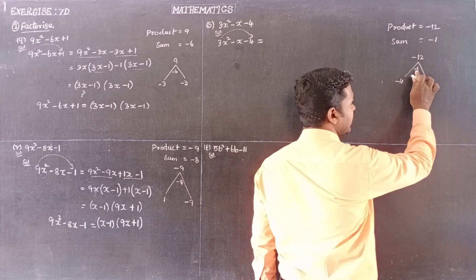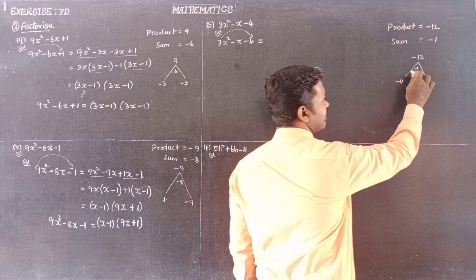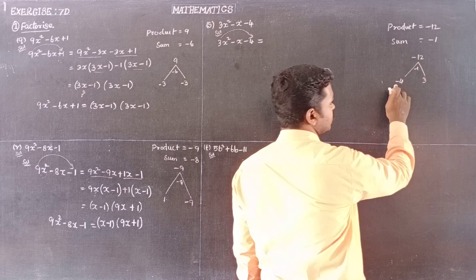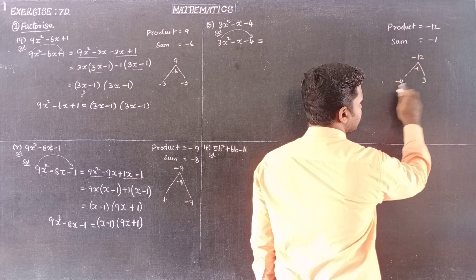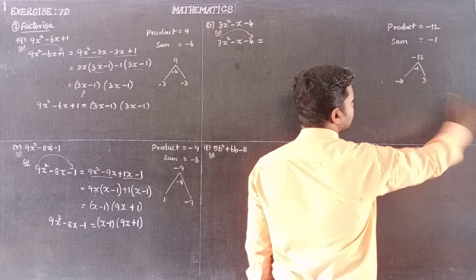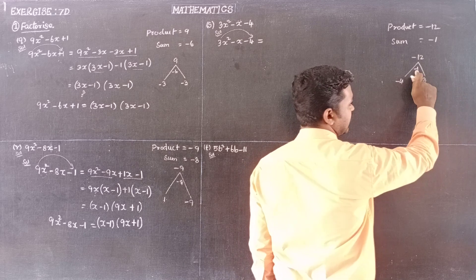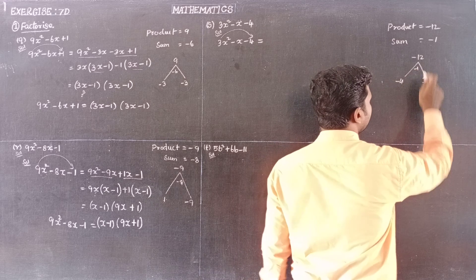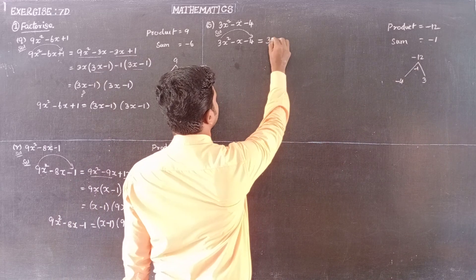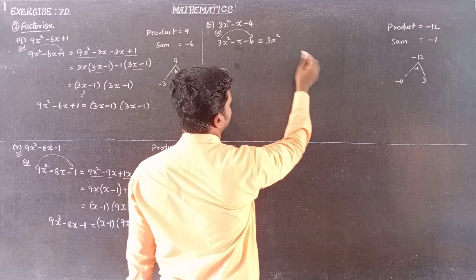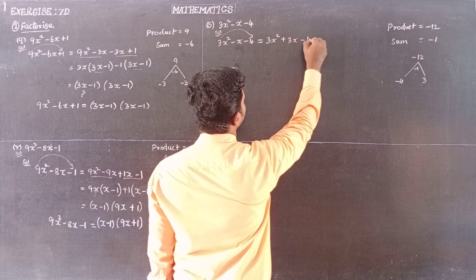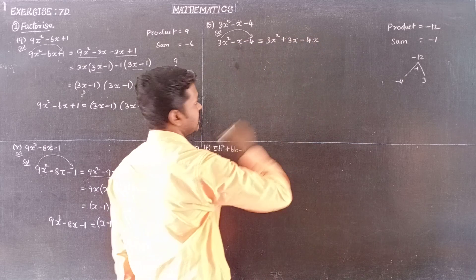Product is minus 12, sum is minus 1. The numbers are minus 4 and plus 3: minus 4 times 3 is minus 12, and minus 4 plus 3 is minus 1. So we split the middle term into minus 4x plus 3x.